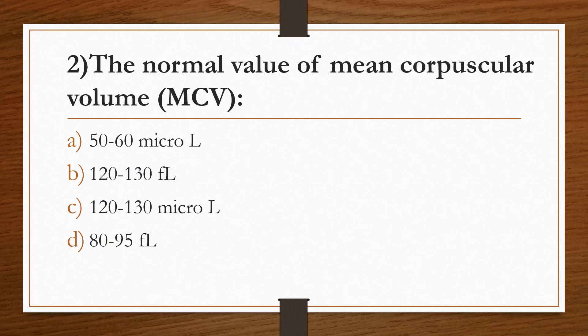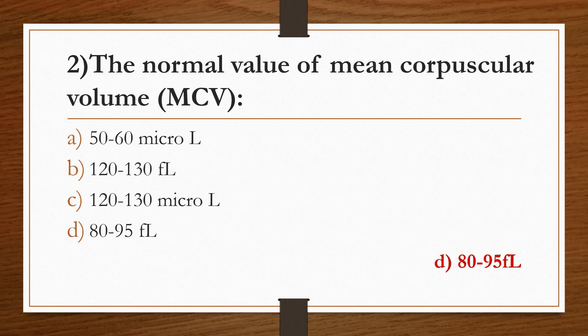Second question: the normal value of mean corpuscular volume, that is MCV. Option A: 50-60 μL. Option B: 120-130 μL. Option C: 120-130 μL. Option D: 80-95 μL. Answer is Option D, 80-95 μL.